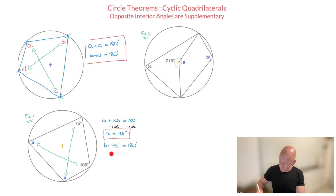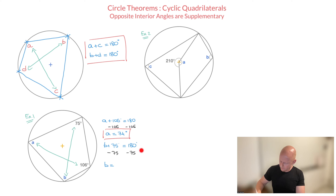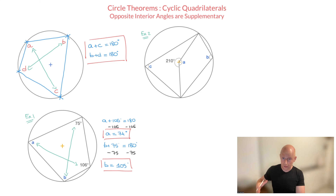For angle B, I solve the second equation. We have B plus 75 equals 180, so subtracting 75 from both sides leads to B equals 180 minus 75, which is 105 degrees. And we're done — we've just found both of those unknown angles.